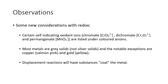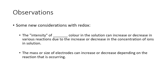Some new considerations with redox: certain self-indicating oxidants like chromate, dichromate, and permanganate are listed under colored anions. Most metals are gray solids — not silver — so if it reads as silver it just means gray colored. The noticeable exceptions are copper, which is salmon pink, and gold, which is yellow. Remember that displacement reactions will have substances coat the other metal.